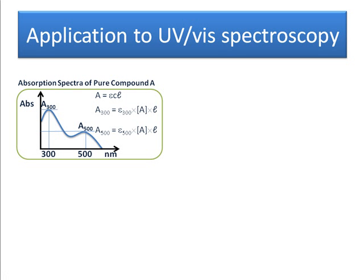So if I have an absorption spectrum of a pure compound A, and if I know the absorption at any wavelength, I can work out the extinction coefficient - how well it absorbs at that wavelength once I know the concentration - according to the Beer-Lambert law: A equals epsilon C L, where epsilon is the extinction coefficient.